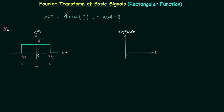Because the rectangular function is the combination of step signals, we can use the method of differentiation to calculate its Fourier transform. We will differentiate the signal waveform and from the obtained result we will calculate the Fourier transform.